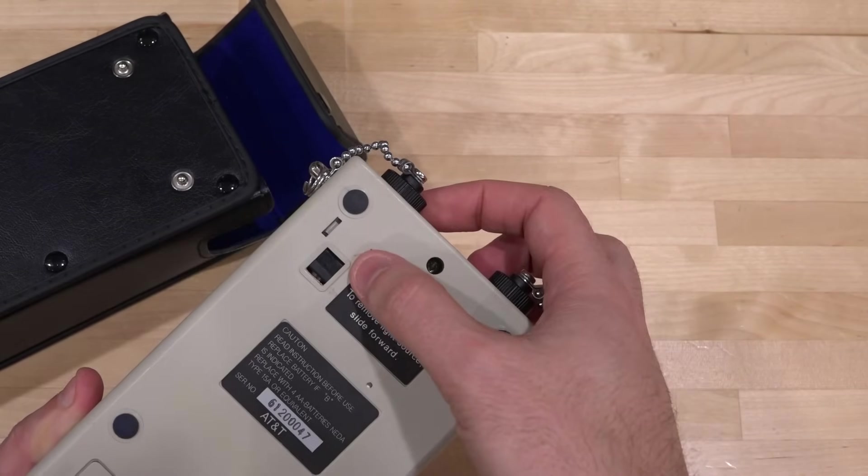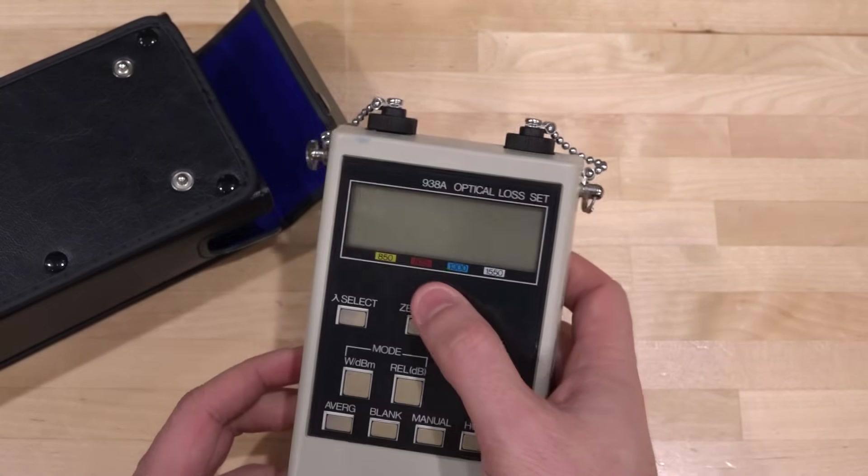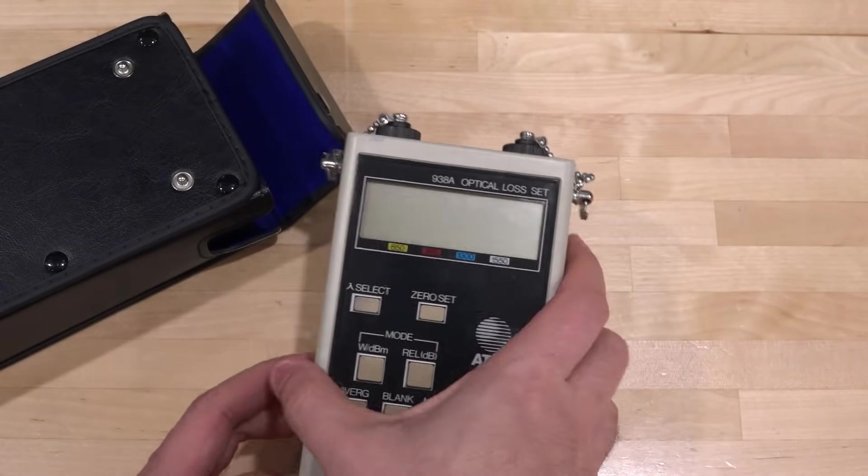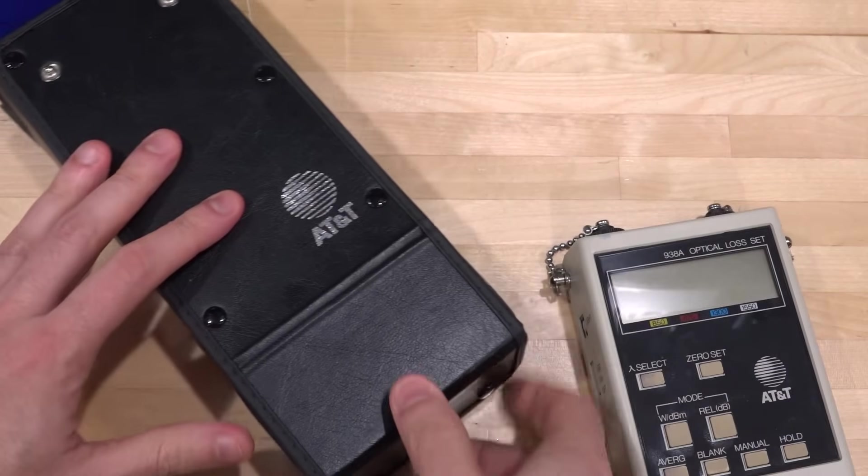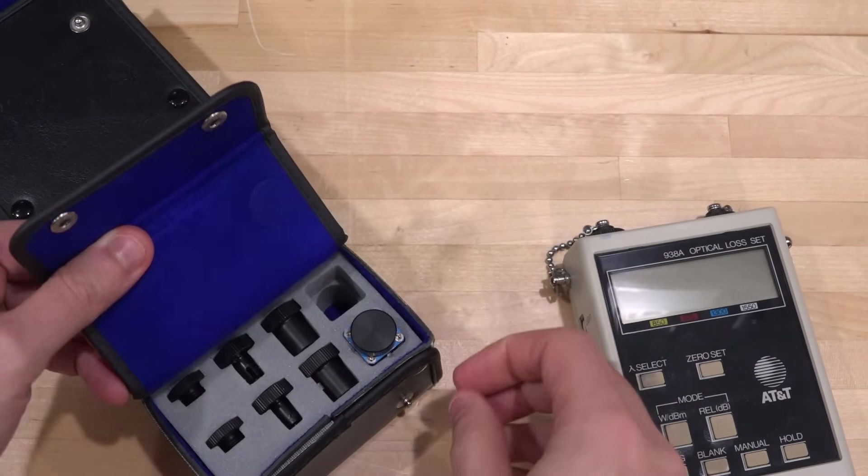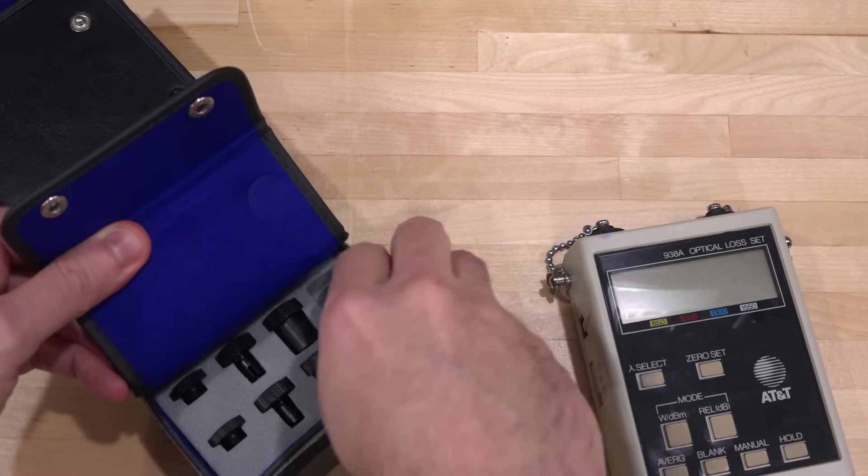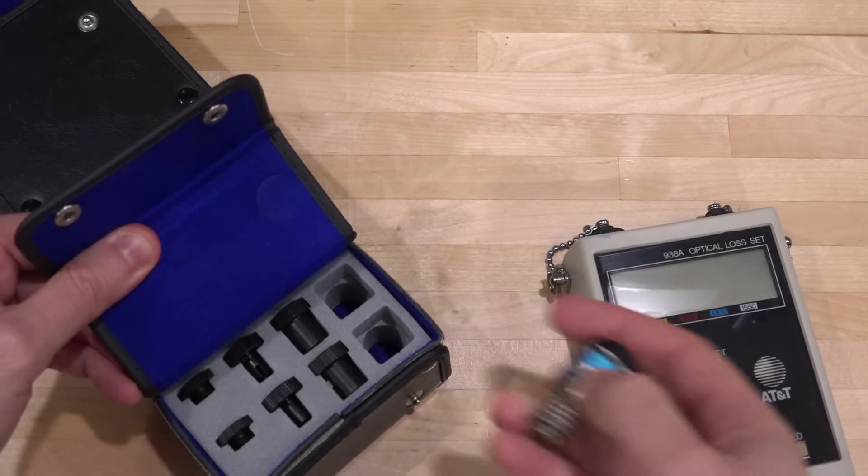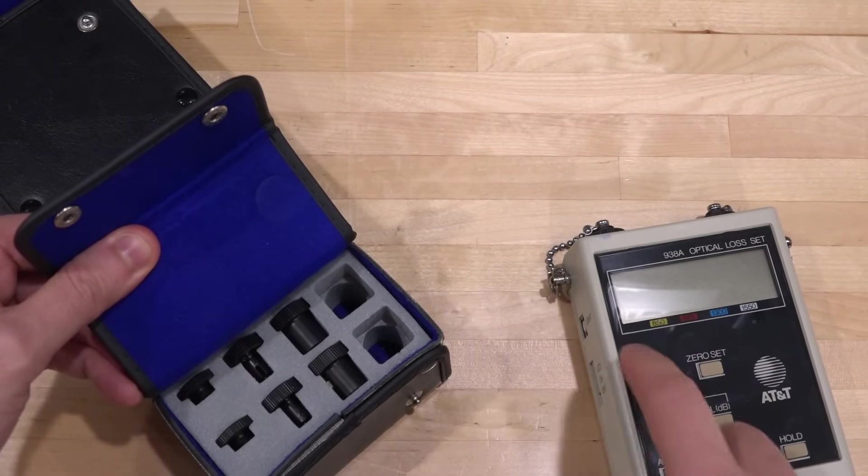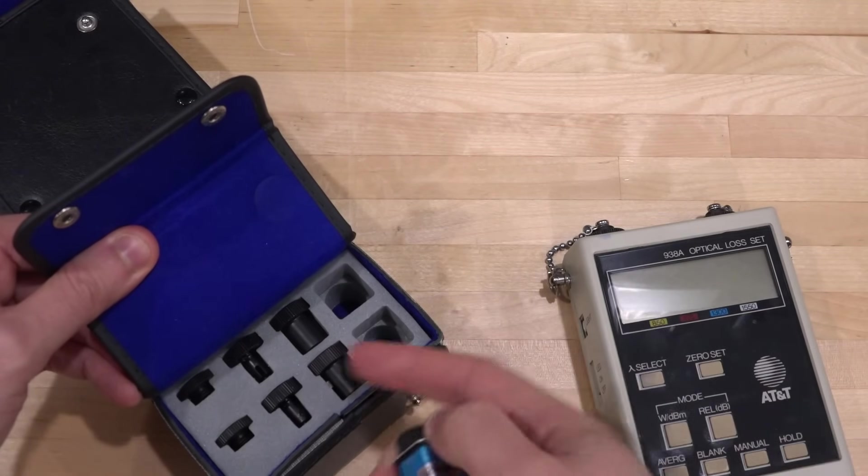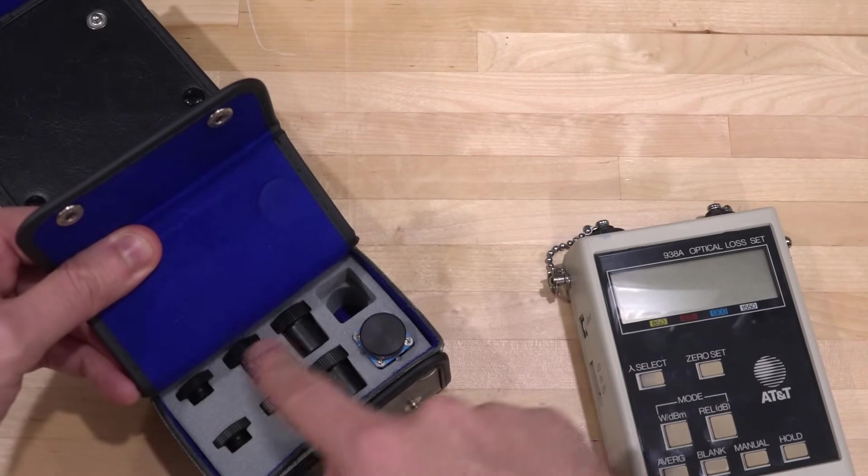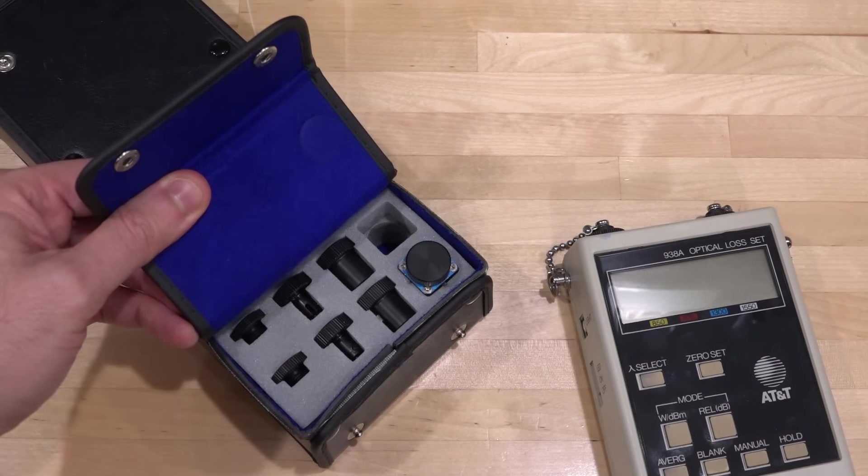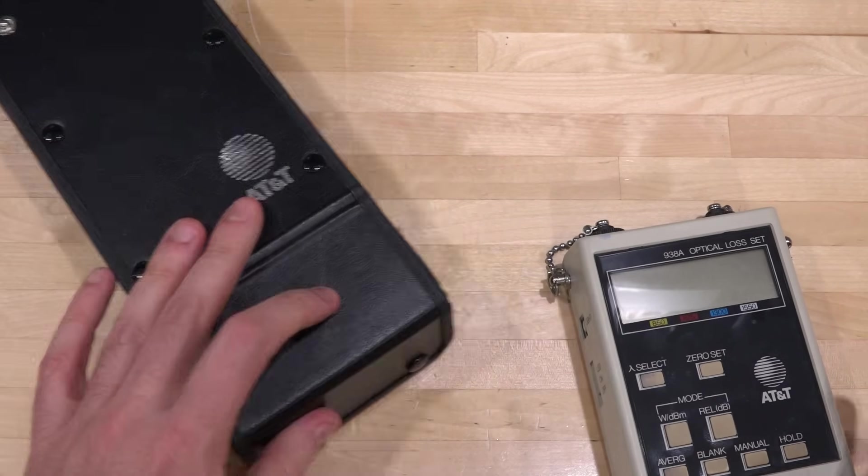There's obviously a module already in there and you can eject that module and replace it with a different one. By the color of this, I suspect that this is the 875 nanometer module. Now underneath it is the compartment where you can keep additional modules. Unfortunately one of them is missing, which is very sad, but there is another one in here and this one is blue. This must be the 1300 nanometer one. There's also a whole bunch of optical converters for connecting to different kinds of fiber optics.